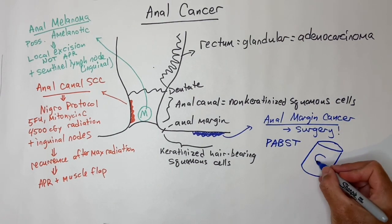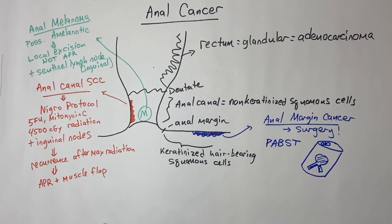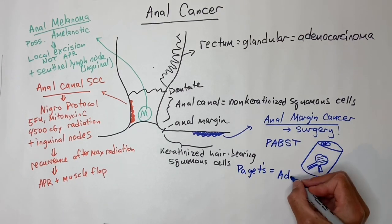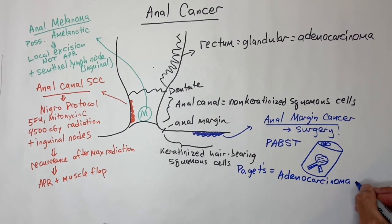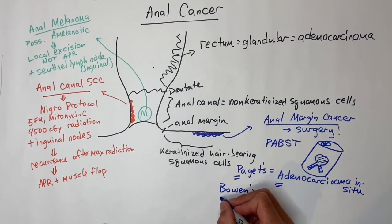Extramammary Paget's disease is adenocarcinoma in situ of the perianal skin. Bowen's disease is squamous cell carcinoma in situ of the perianal skin. PABST Blue Ribbon is a mnemonic for that, P-A-B-S-T.